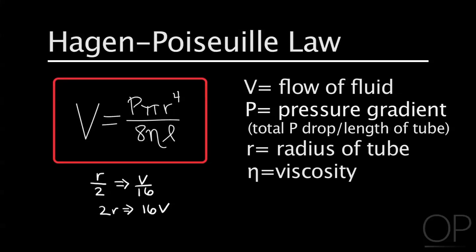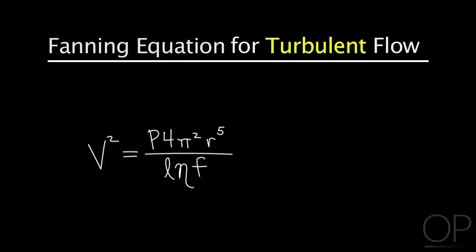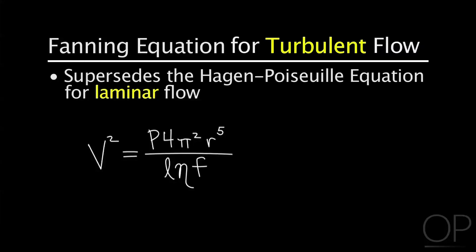The efficiency of flow distal to this obstruction decreases because of a different physics equation, the Fanning equation, for turbulent flow. This equation supersedes the Hagen-Poiseuille equation for laminar flow.